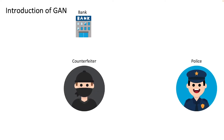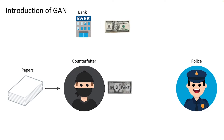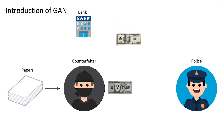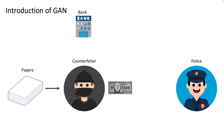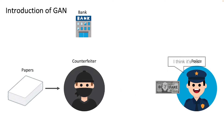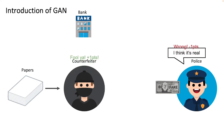During every round of the game, we will collect some real money from the bank and the fake money made by the counterfeiter to present to the police officer. For each round, the scores of the police officer and the counterfeiter are calculated as follows: if the police correctly identify the target as real money from the bank, he gets a point. If the counterfeiter succeeded in fooling the police, the bad guy gets a score and the police loses one.